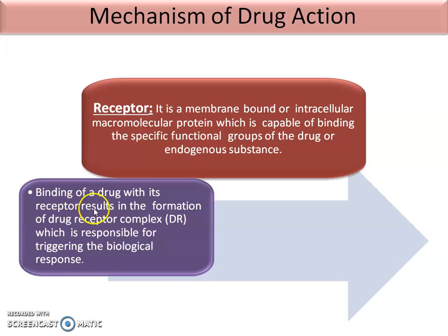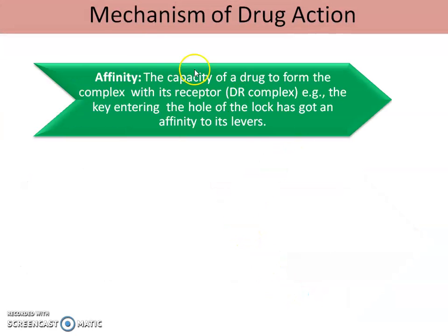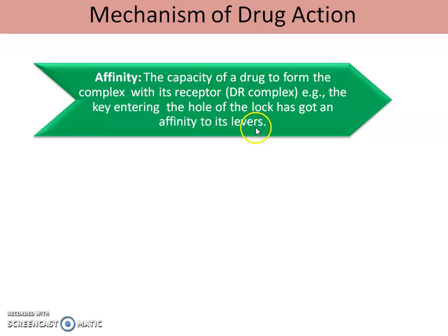Binding of a drug with its receptor results in the formation of a drug-receptor complex — DR — which is responsible for triggering the biological response. The capacity of the drug to form this DR complex is known as affinity. Example: like a key entering the hole of a lock has affinity for its lock.